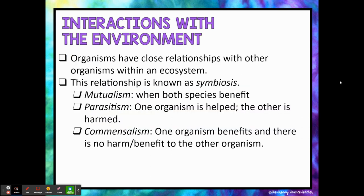Organisms within these ecosystems have very close relationships with one another. Some of these relationships are beneficial, some are harmful. The relationship that two organisms have between one another is known as symbiosis, and there are three forms. Mutualism is where both species benefit from the relationship. Parasitism is where one organism benefits but in the process the other organism is harmed or negatively impacted. Commensalism is where one organism benefits but the other is neither harmed nor does it get a benefit.